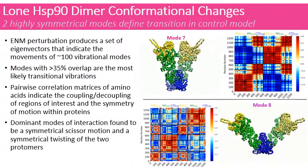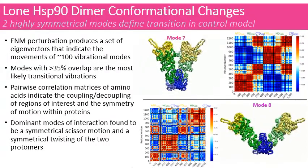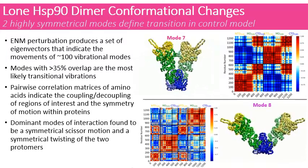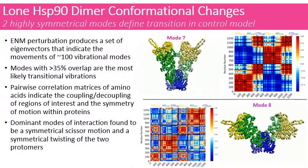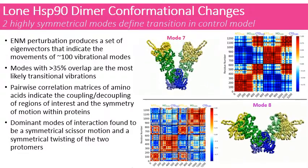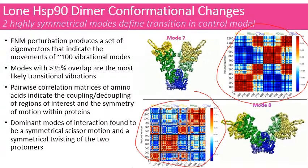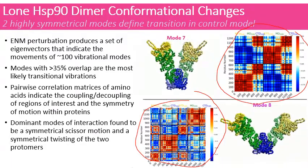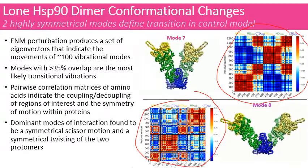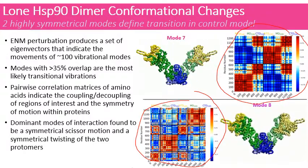The first model that we performed computational analysis on was a lone Hsp90 dimer conformation. Our elastic network model perturbation produced a set of eigenvectors that indicated the movements of around 100 vibrational modes. Modes with more than 35% overlap between conformations are the most likely transitional vibrations. Pairwise correlation matrices of amino acids indicate the coupling and decoupling of regions of interest and the symmetry of motion within proteins. The dominant modes of interaction are found to be symmetrical scissor motion and a symmetrical twisting of the two protomers in this single molecule binding.